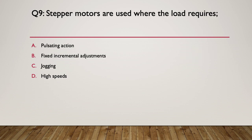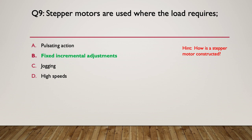Question nine: stepper motors are used where the load requires what? A — a pulsating action; B — fixed incremental adjustments; C — the ability to be jogged; or D — high speeds. Think about how a stepper motor is constructed. The answer is B — fixed incremental adjustments. A pulsating action isn't quite right — the steps are very fine. Jogging has nothing to do with it. The big advantage is fixed incremental adjustments: you get exactly the same amount of step out of a stepper motor every single time.